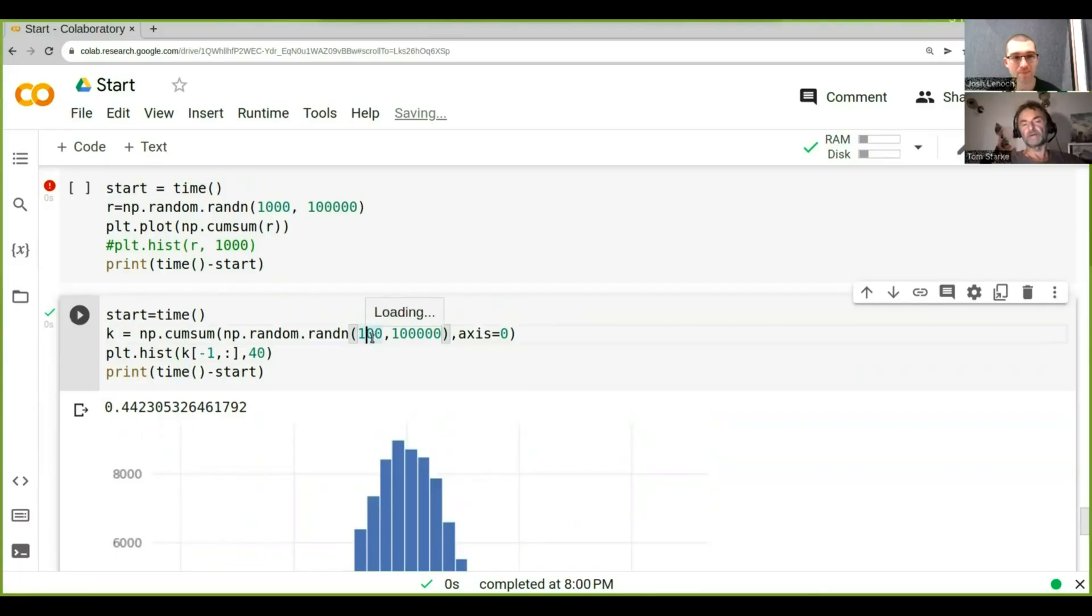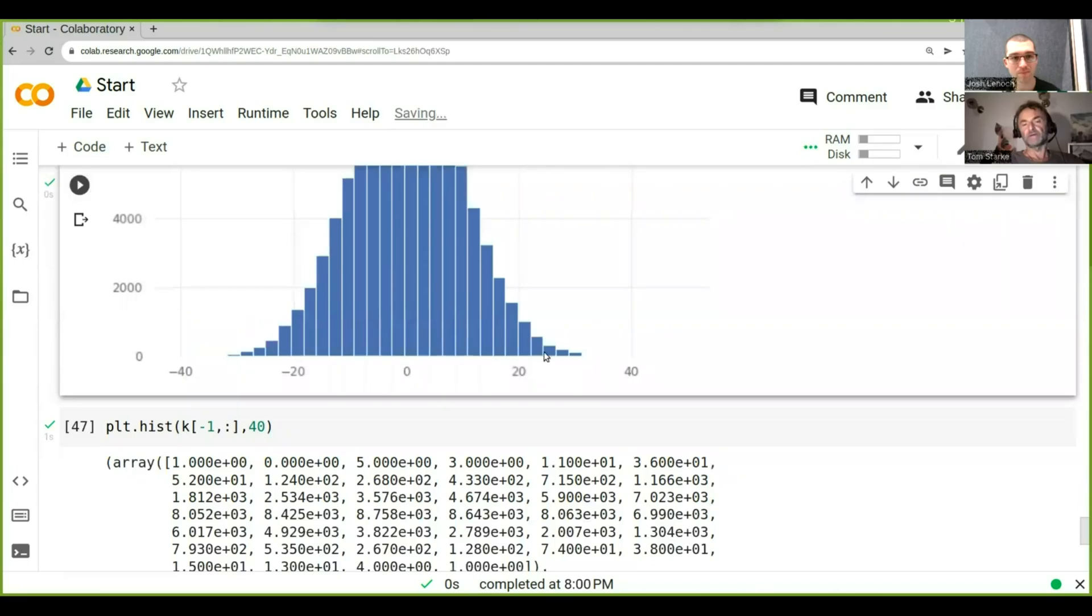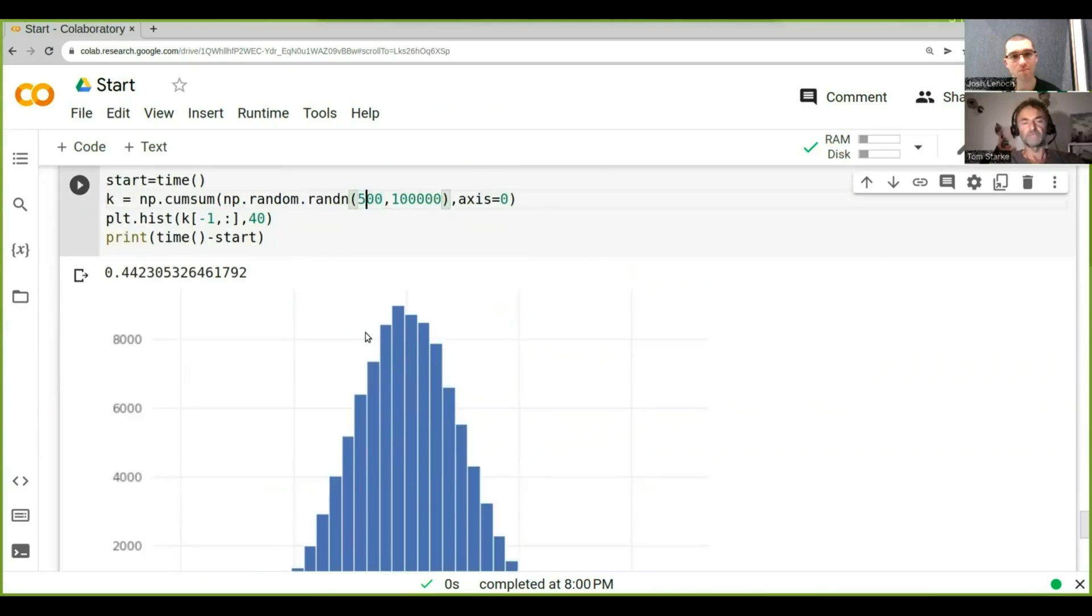What we can also do is have a look, this is say, we've got 100 timesteps and we end up at the most plus 30, minus 30, what will happen to this distribution when we have 500 timesteps?